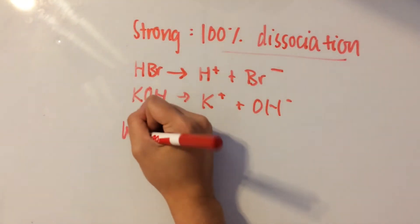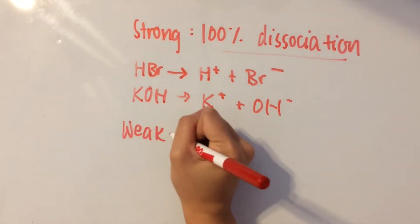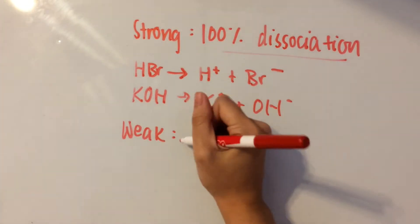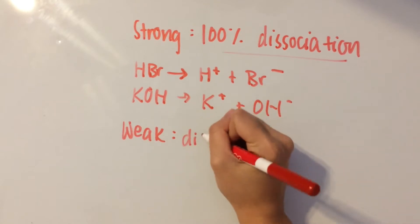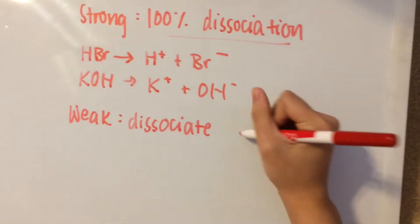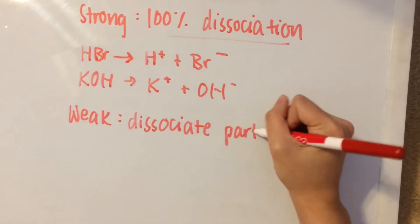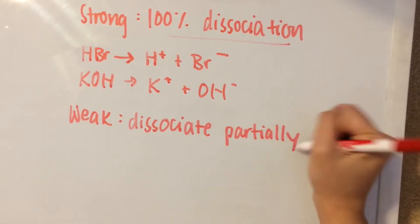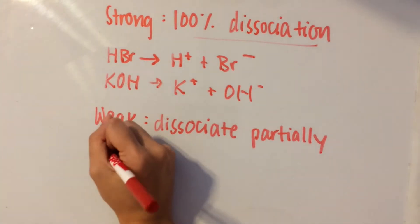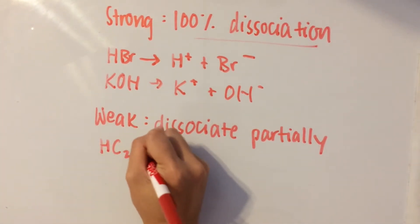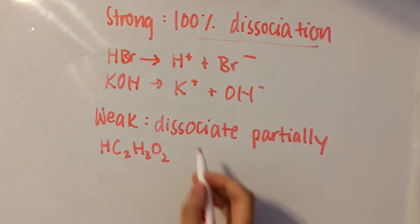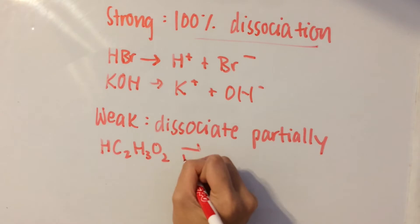Now we have our weak acids and bases, which do not undergo a hundred percent dissociation. They only dissociate partially. So a weak acid would be acetic acid, which is HC2H3O2.